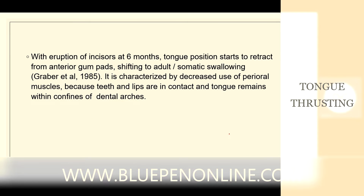With eruption of incisors at 6 months, tongue position starts to retract from the anterior gum pads, shifting to adult or somatic swallowing. This transition is characterized by decreased use of perioral muscles because the teeth and lips are in contact and the tongue remains within the confines of the dental arches.